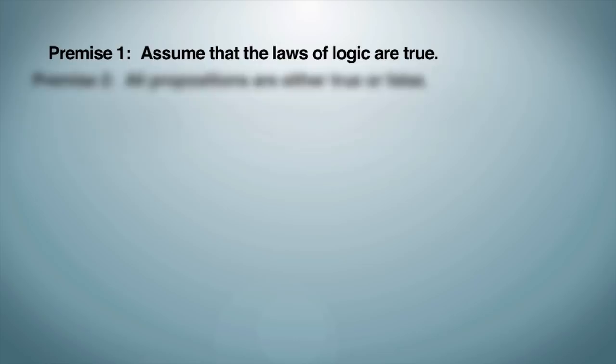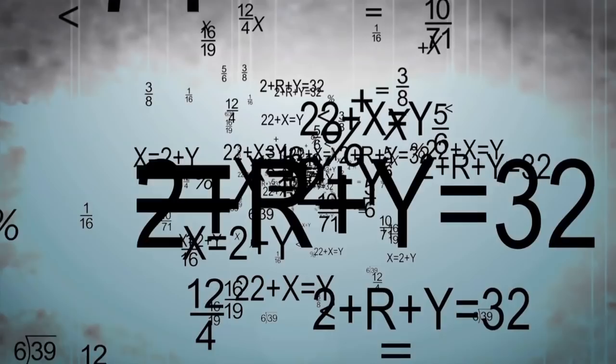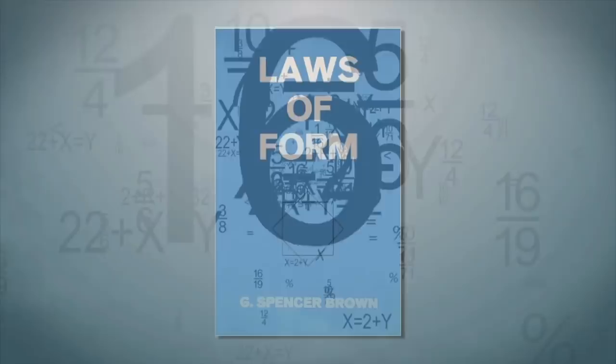Because of that, we can also deny premise 3 and say it is a false dichotomy. I can explain how and why if we reduce the problem to mathematics, which can show the statement 'this proposition is false' can actually be solved. Allow me to explain using the work of G. Spencer Brown.